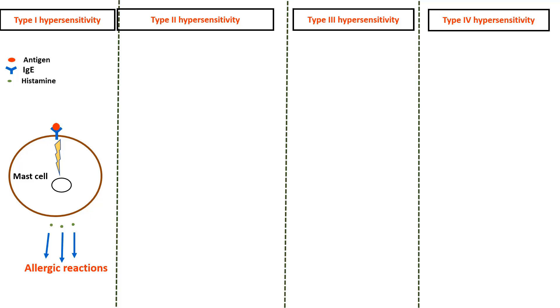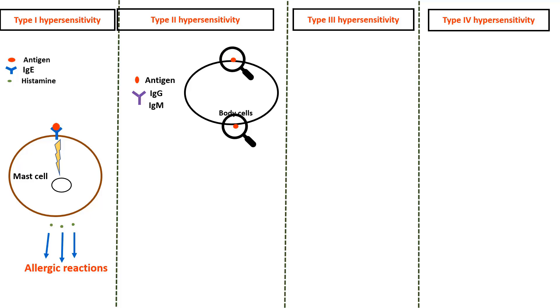In hypersensitivity type 2, the antigen is not an external allergen floating in the blood but rather certain molecules attached to the external surface of the patient's cells.